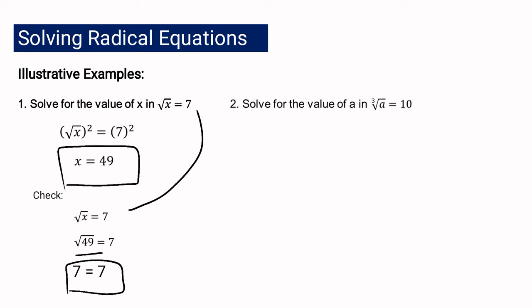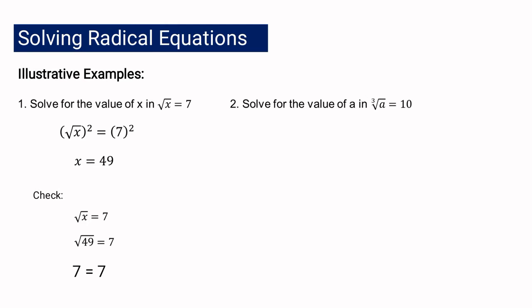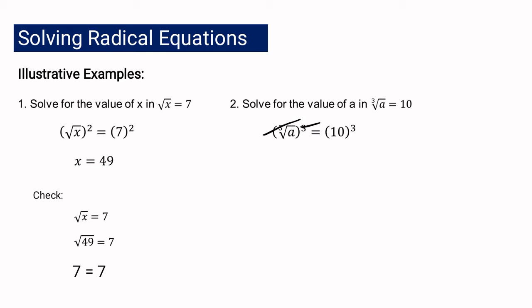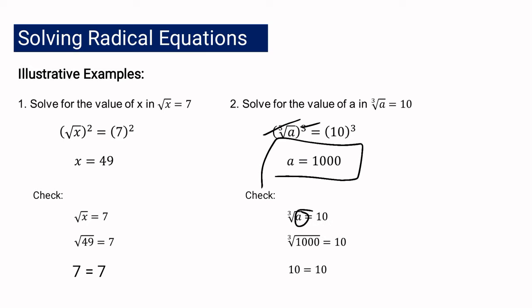For number 2, solve for the value of a in: cube root of a is equal to 10. The expression containing the unknown is already isolated, so we proceed to step 3. The index is 3, so we raise both sides by 3. The radical cancels out, giving a equals 10 cubed, which is 1000. To check: cube root of 1000 is 10, so 10 equals 10. This confirms that a equals 1000 is correct.